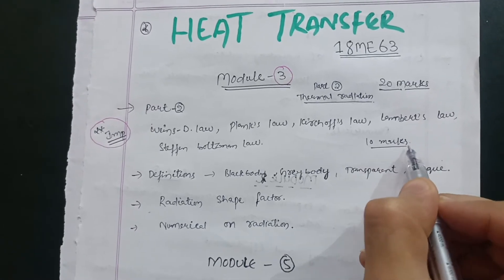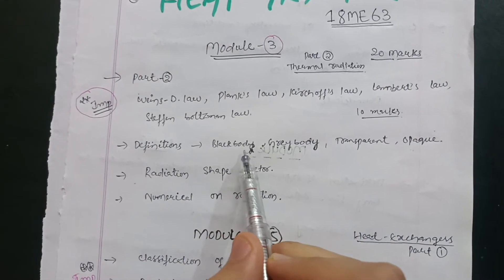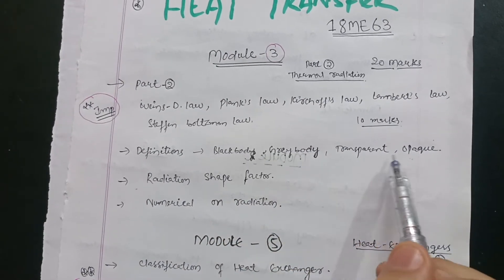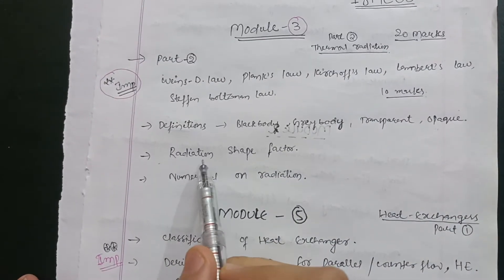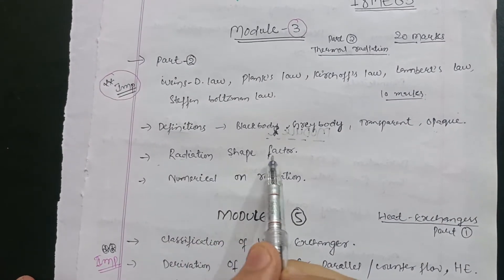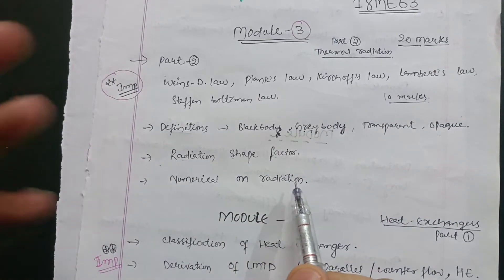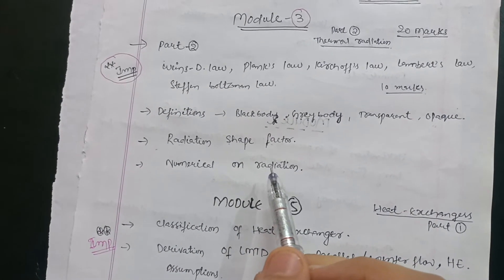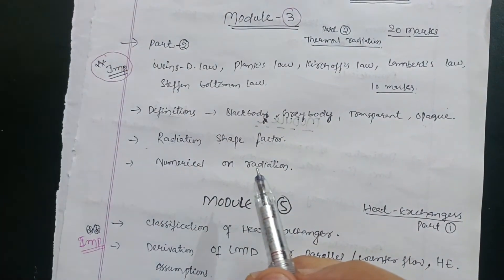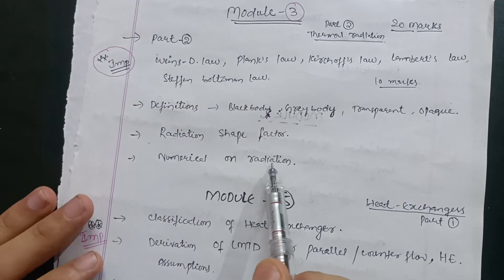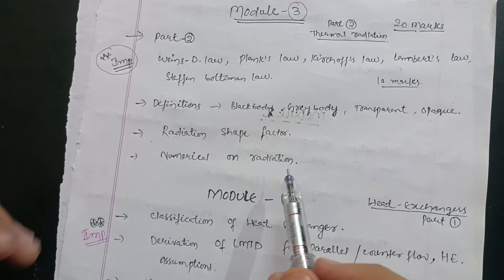Cover the definitions and these laws, then also cover definitions such as black body, gray body, transparent, and opaque. After that, study the radiation shape factor and numericals on the radiation part. These 20 marks are practically in your pocket — sometimes they ask 20 marks of theory in this module, and sometimes 10 marks of numerical problems. Either way, you can easily score 20 marks in Module 3.